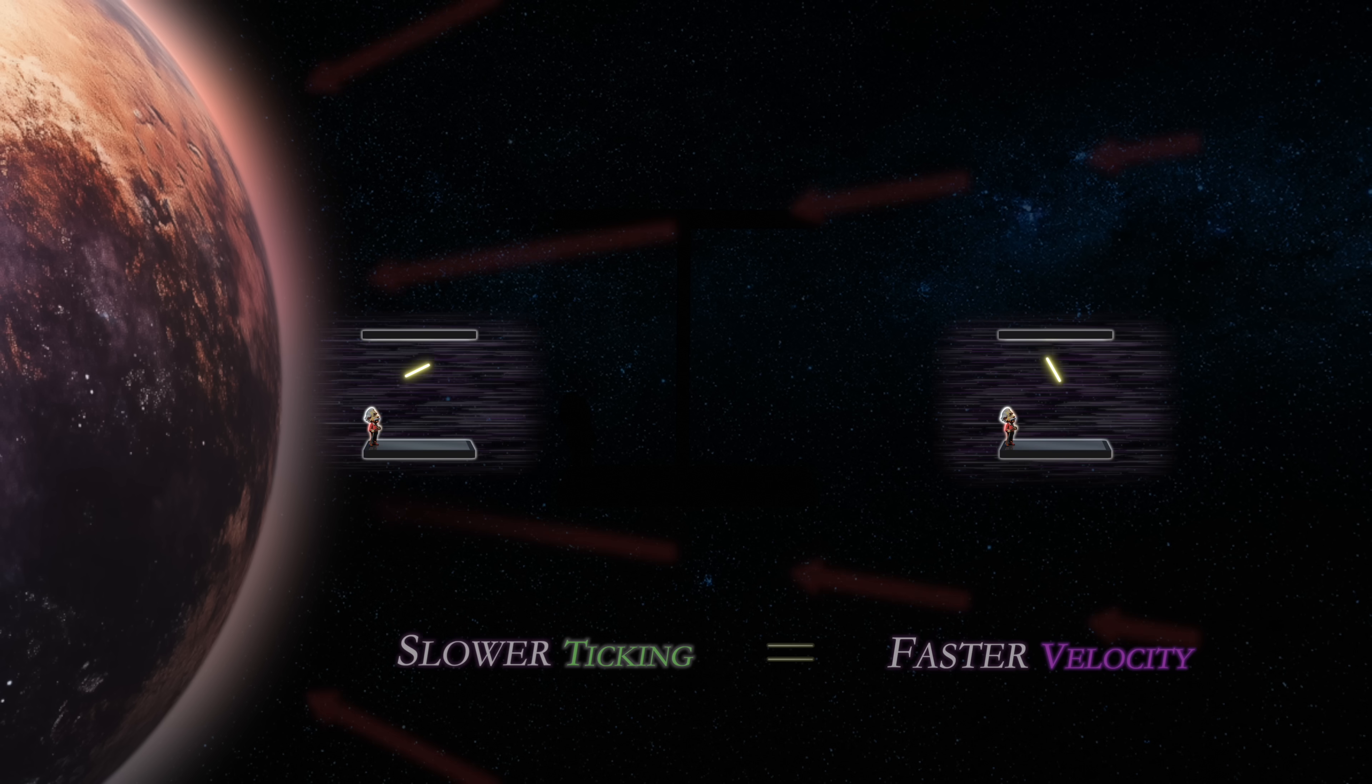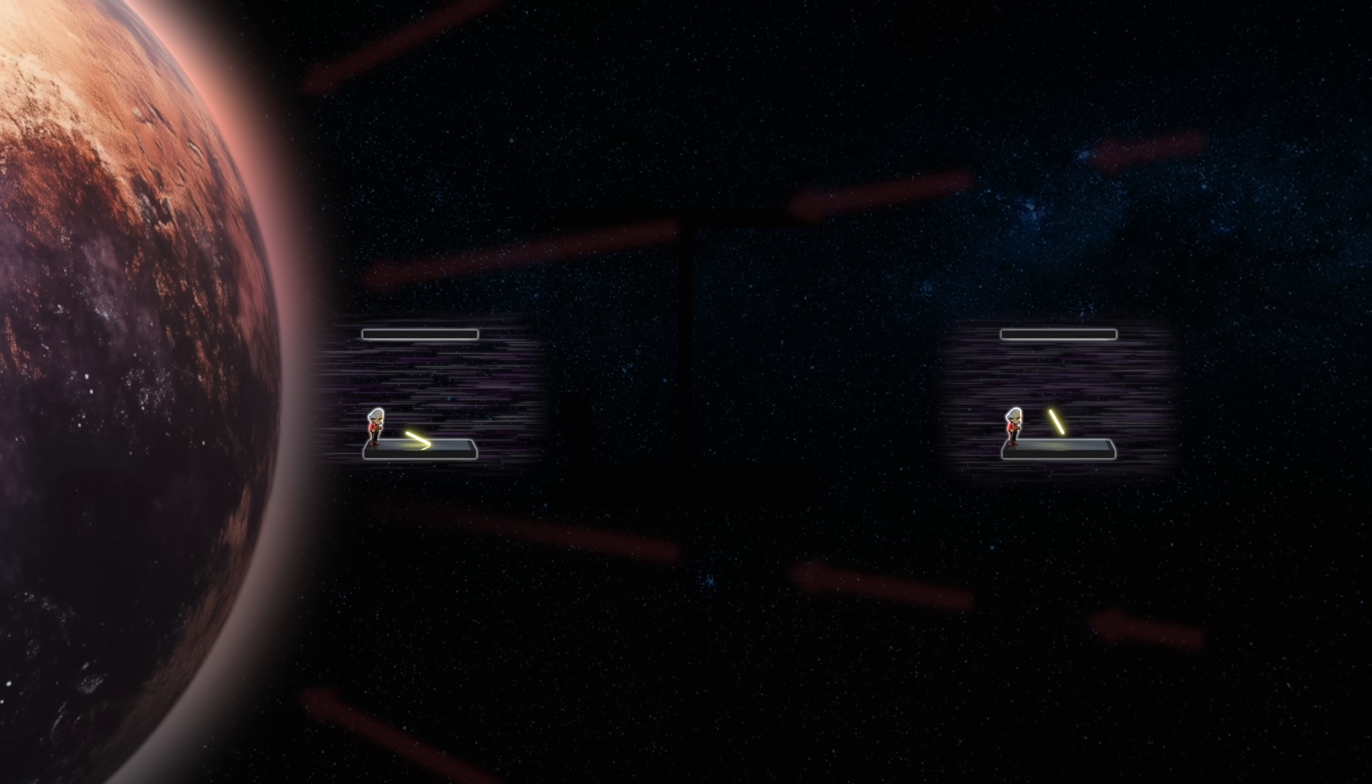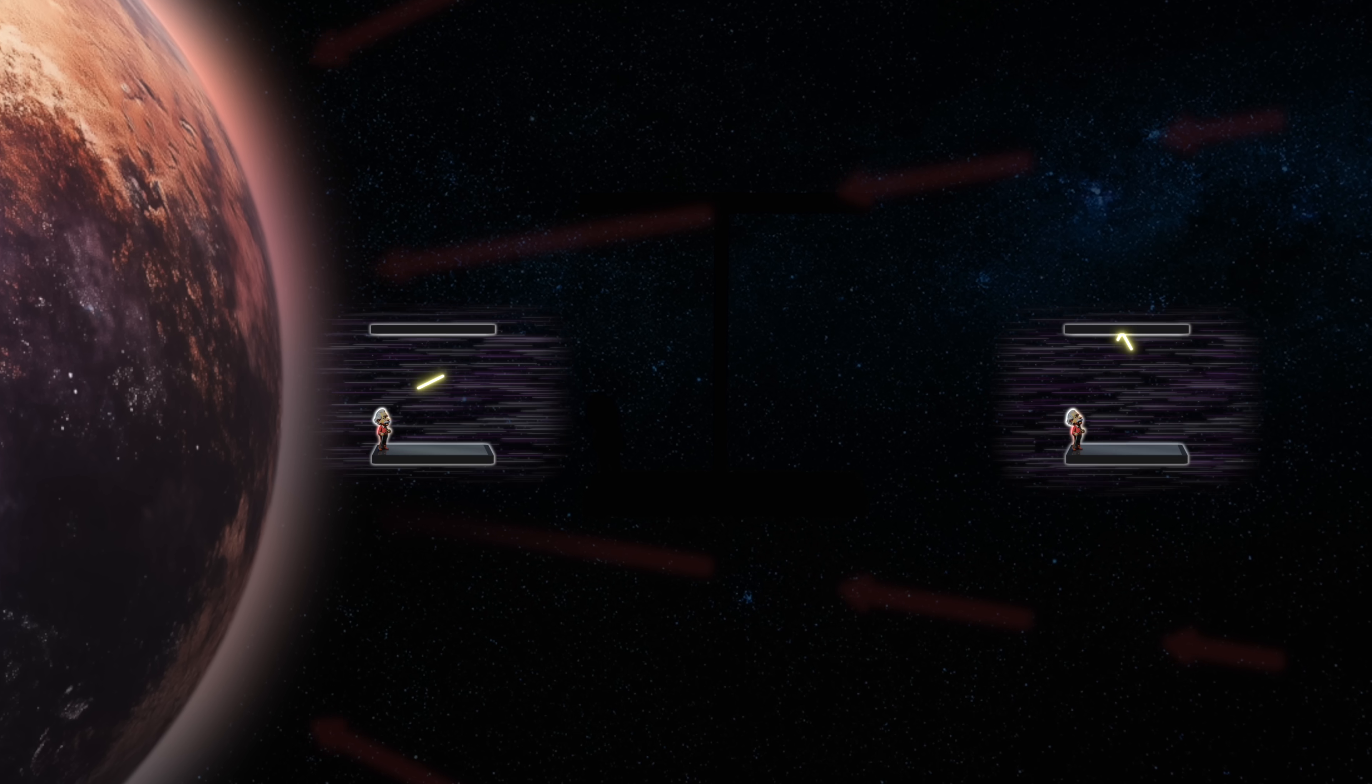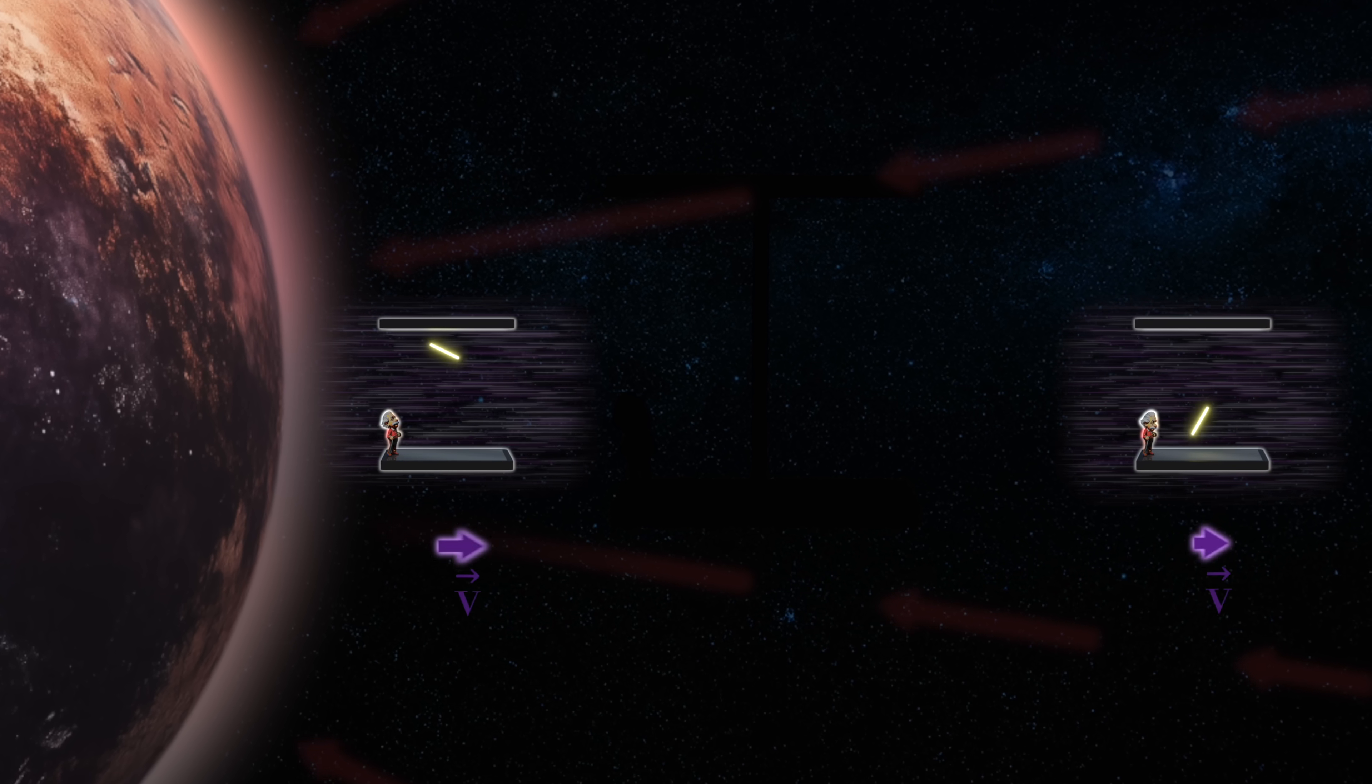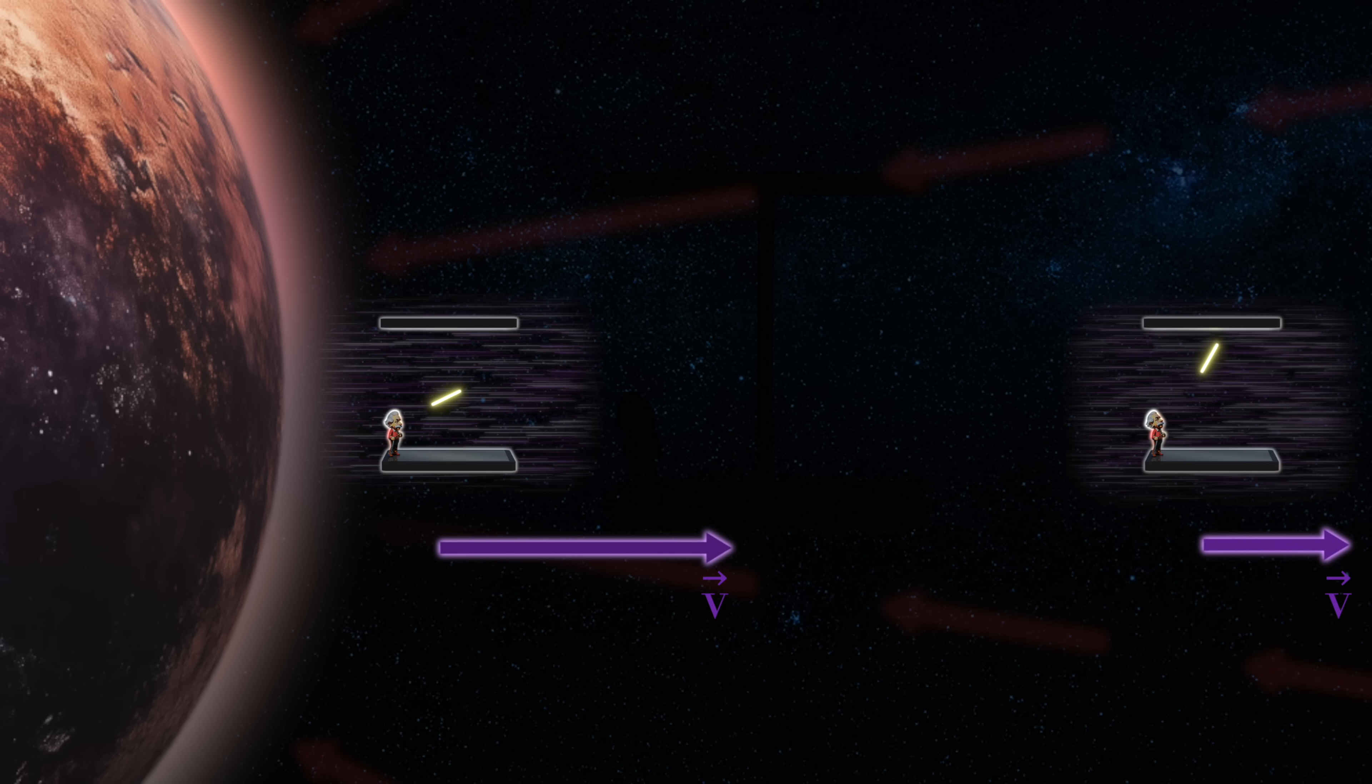Hence, by applying the aforementioned reasoning, we can therefore logically deduce that clocks lower down in a gravitational field are traveling at a higher velocity through this physical space than clocks which are further up.